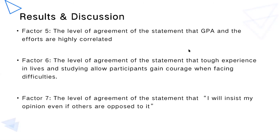The seventh factor is the level of agreement with the statement 'I will insist on my opinion even if others are opposed to it.' According to the results, this has a positive relationship with career maturity. Students who strongly agree usually insist on their decisions and opinions about future career. It appears reasonable that those who easily change their opinion after persuasion would have difficulty making a firm decision on career.